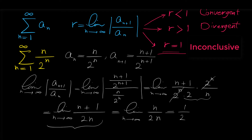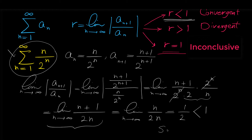Because this limit is one half, and one half is less than one, it means that the given series — sigma from n equals one to infinity of n over 2 to the n — is convergent.